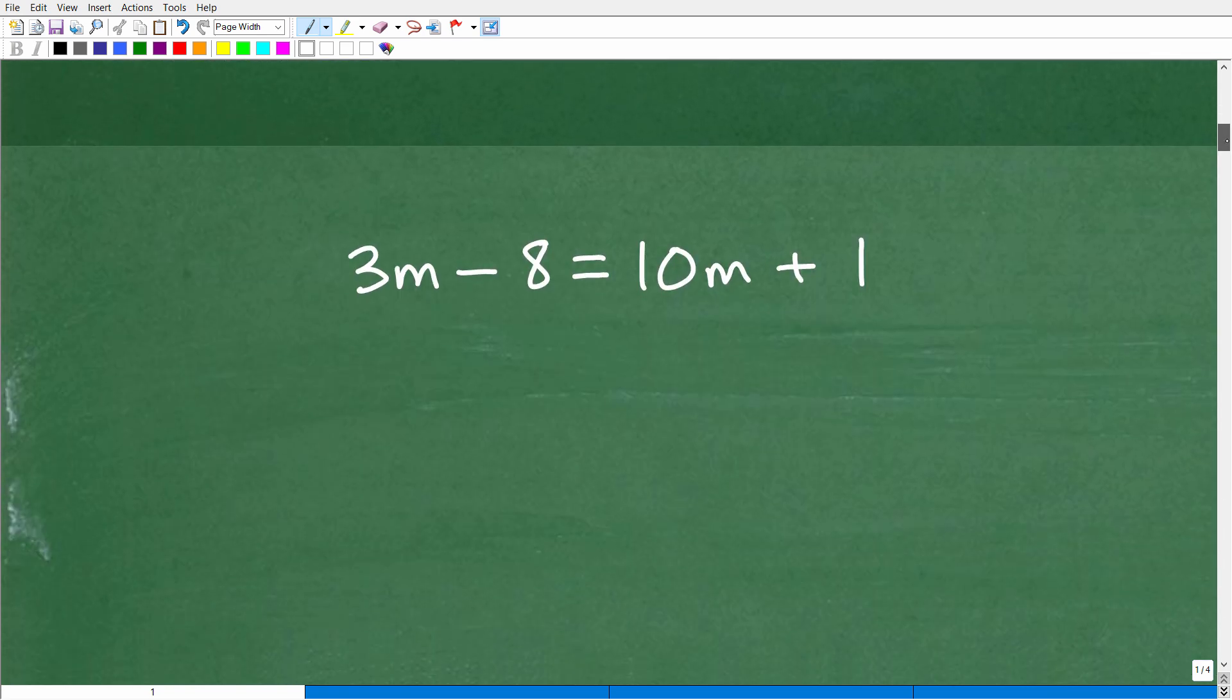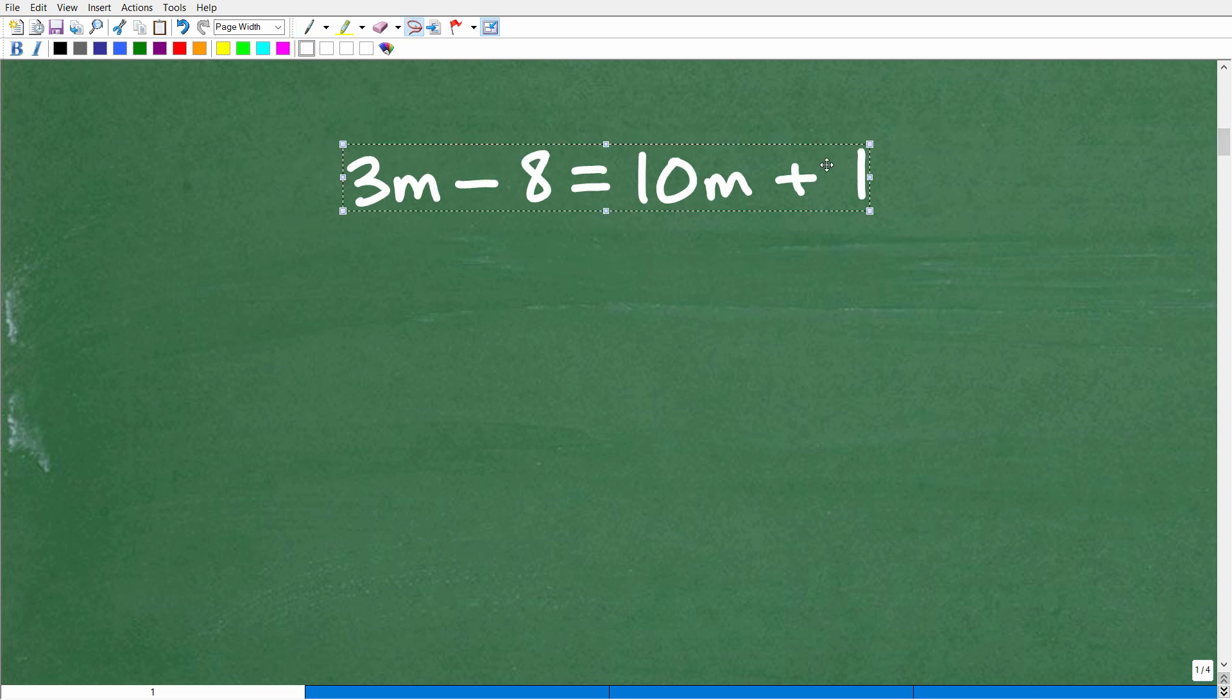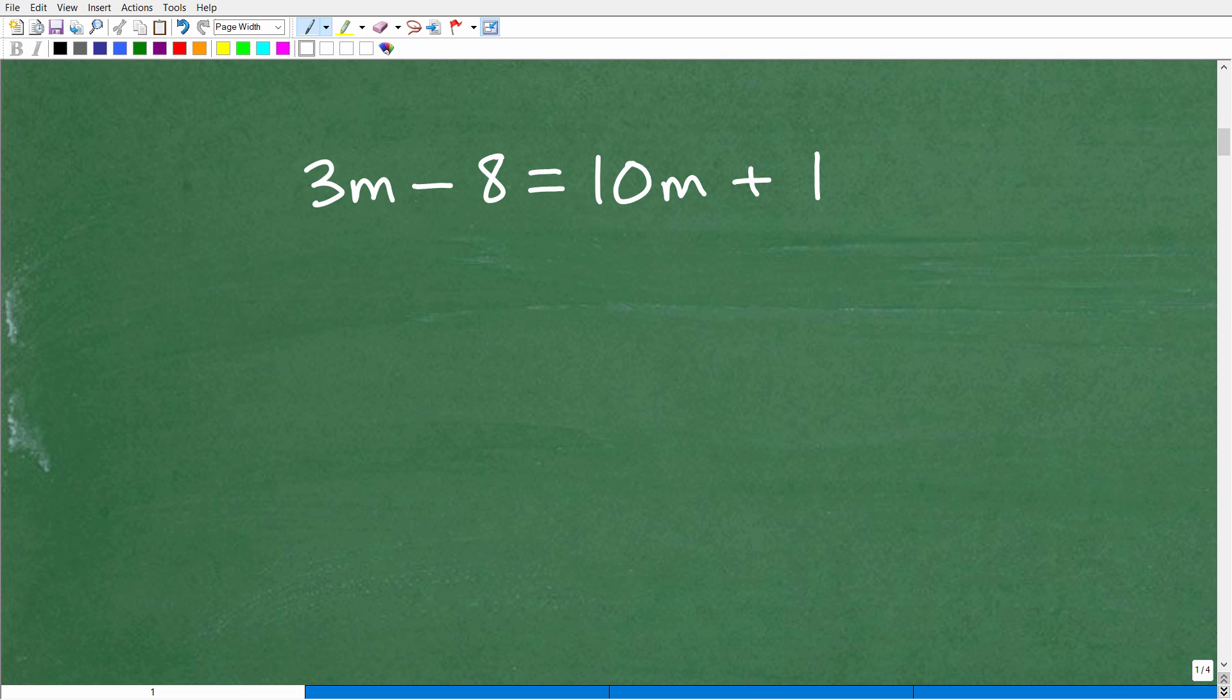All right, so let's get into this solution now. And here is our lovely equation, 3m minus 8 equals 10m plus 1. You want to be really as neat as possible. Neat and structured. This is so important. Now, how do you know how to work this problem? Well, hopefully you have an excellent teacher that's showing you by example. So we have 3m. We have to kind of assess what's going on. We have this variable over here, but we have another variable term over here. So this 10m is on the right-hand side of the equation. I'm going to have to move that over to the other side.